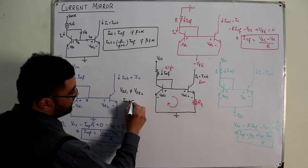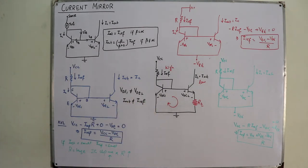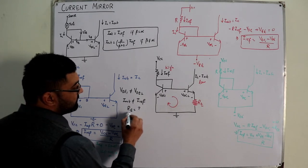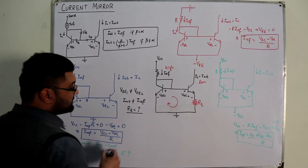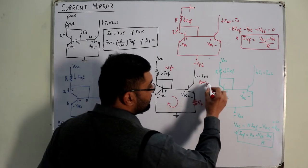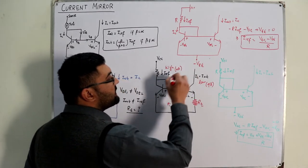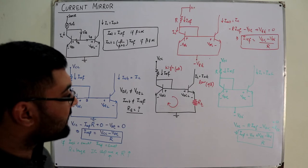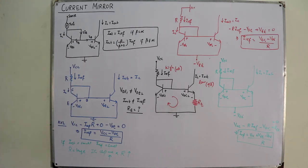This circuit is used for obtaining a low output current from a high input current. In problems with this figure, you are asked to find the value of RE such that the output current is small — typically in the microampere range — while the input reference current is in the milliampere range. Apply KVL to the loop using the VBE expressions.